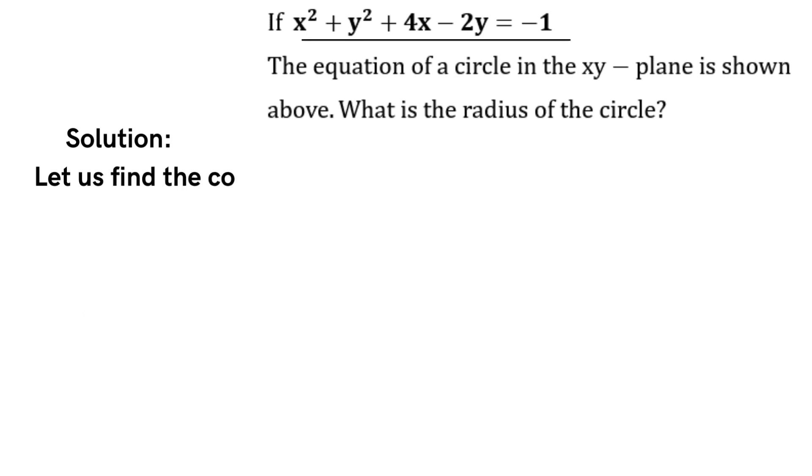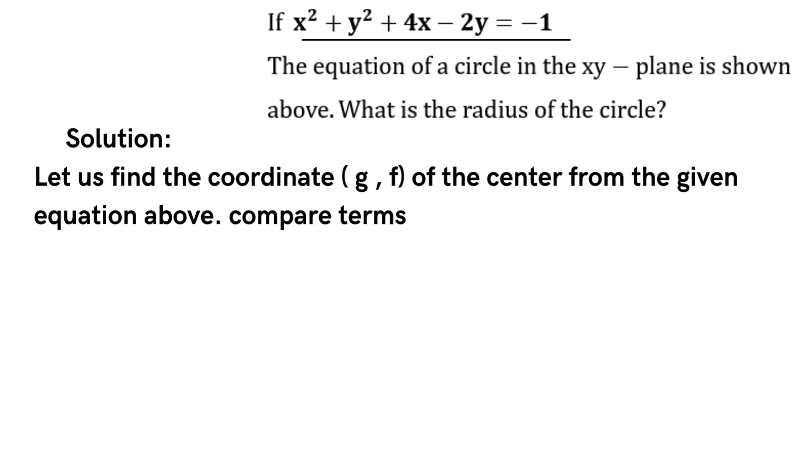Compare the terms of the given equation with its respective terms of the general form. So 4x equals negative 2gx. Thus g equals negative 2.